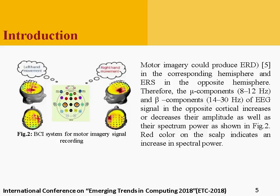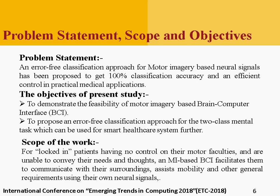The C3 and C4 positions on the scalp are where the electrodes were placed for data recording of motor imagery. From the above discussion, we observed that if we could classify the motor imagery based neural signals accurately, this can be used for different medical applications such as rehabilitation or mobility assistance applications.